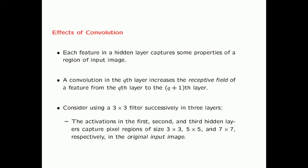The receptive field of a feature is the part of the input image that particular feature responds to. For example, using a 3 cross 3 filter in three layers: an activation in the first layer captures a 3 cross 3 pixel region of the original image. The second hidden layer captures a 5 cross 5 region, and the third hidden layer captures a 7 cross 7 region. So by using successive layers, you capture larger and larger regions of the input image.